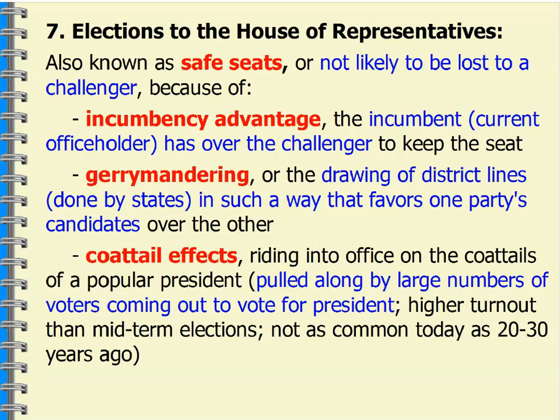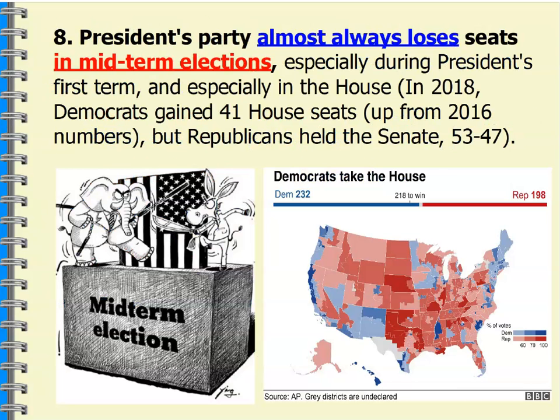Coattails is another factor, though we haven't seen this happen as much — there are always predictions, but it doesn't really get pulled off. It was more popular in the late 80s and early 90s: a president who wins by a huge margin brings lots of House and Senate members along with him. We don't see as much of that today. In midterm elections — in between presidential elections — the president's party usually loses. That was the case with Bill Clinton, George W. Bush, Barack Obama, and Donald Trump.